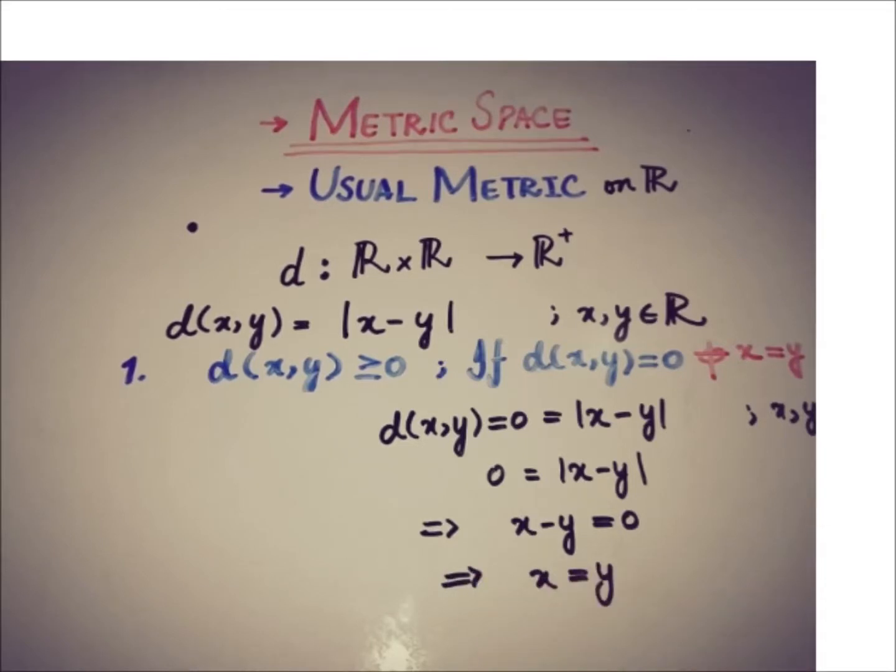So this was an obvious property to prove and this is also sufficient as well because if x and y is equal then we can prove that the metric is equal to 0. So on the same line we can prove its converse. So the first property has been proved; we can prove the second property now.